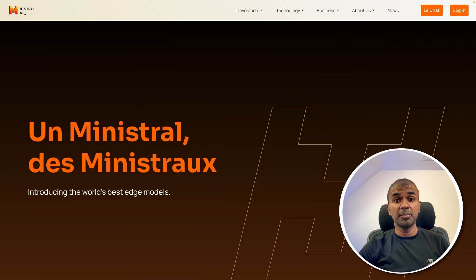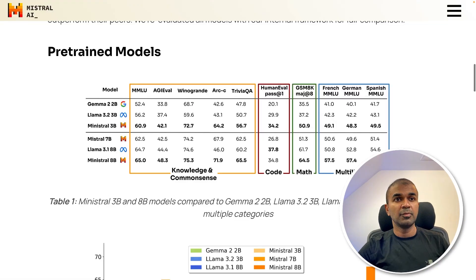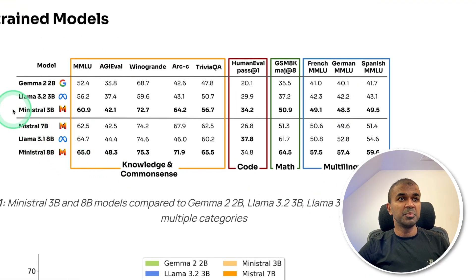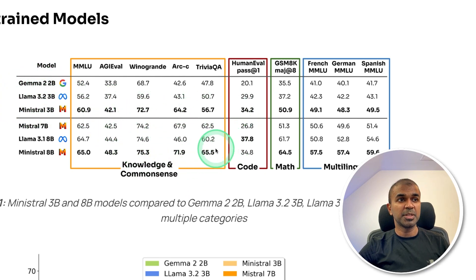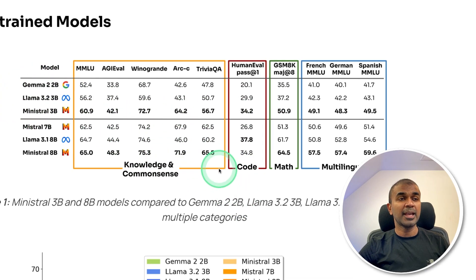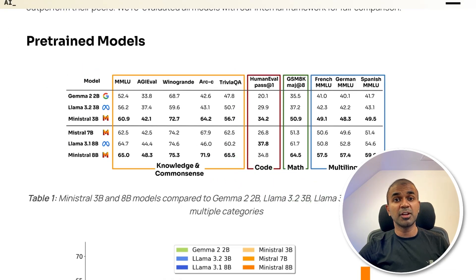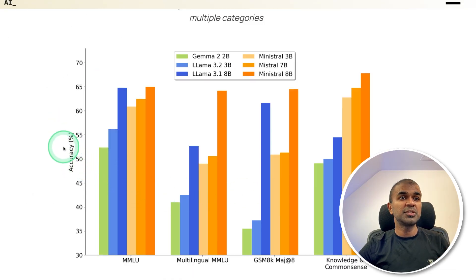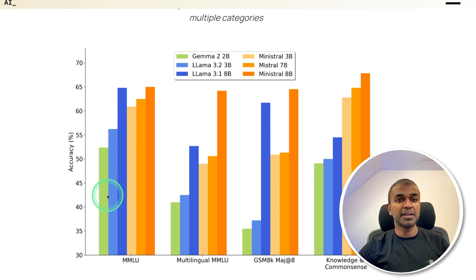Next, we have a Mistral model from Mistral AI. In terms of performance, this Mistral model beats the Gemma 2 2-billion parameter model and the Llama 3-billion parameter model on most of its benchmarks. This is a small model, which means we are able to run it on a mobile device. And when you look at accuracy scores, Mistral 3B and Mistral 8B are performing much better than their competitors.